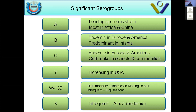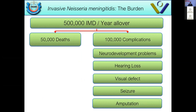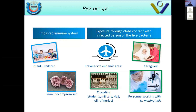It is estimated that 500,000 people suffer from invasive Neisseria meningitidis each year. Of these, 50,000 will die and 100,000 will develop complications. It has a high mortality and morbidity rate, including neurodevelopmental disorders like hearing loss, visual defects, seizures, and amputation of affected limbs.